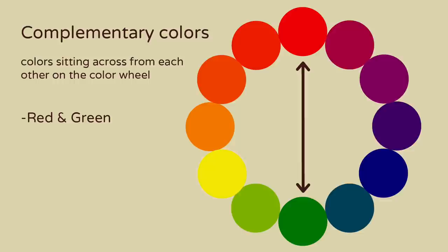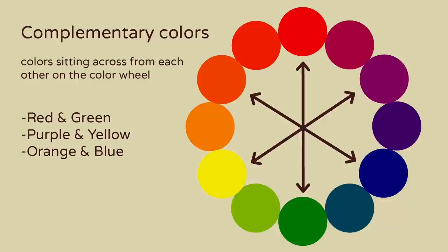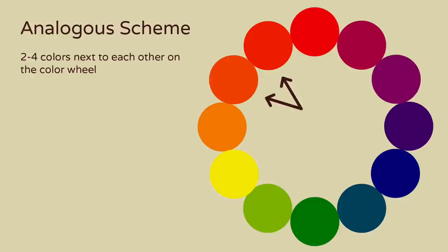Complementary colors sit across from each other on the color wheel. The most common pairs are red and green, purple and yellow, and orange and blue. Putting these next to each other creates great contrast and visual interest, but they can easily overpower each other, so it's important to use them carefully.